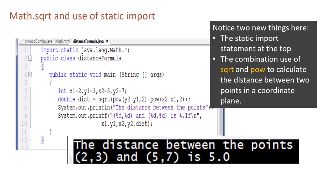Math.sqrt and use of static import. Notice two new things here: the static import statement at the top, import static java.lang.Math.*, and the combination use of square root and pow to calculate the distance between two points in a coordinate plane.